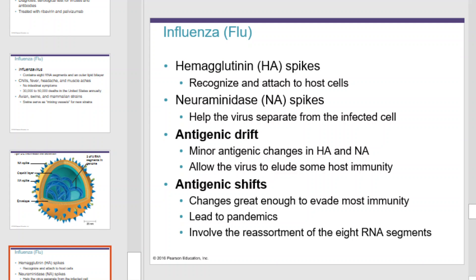Hemagglutinin, or HA spikes, recognize and attach to host cells. Neuraminidase spikes help the virus separate from the infected cell. Influenza virus also exhibits antigenic drift, where minor antigenic changes in the HA and NA spikes help the organism adapt to new hosts and avoid host defenses. Antigenic shifts occur where changes are great enough to evade most immunity and can lead to pandemics. This involves the reassortment of the eight RNA segments.